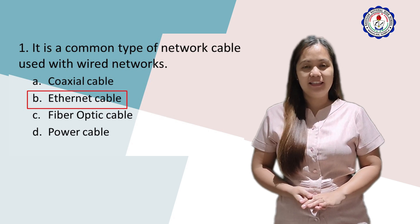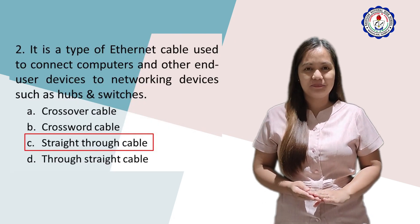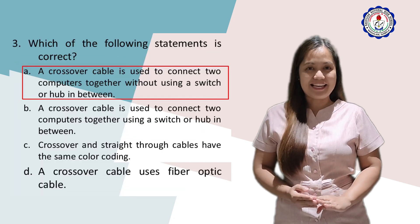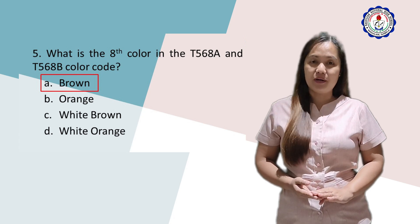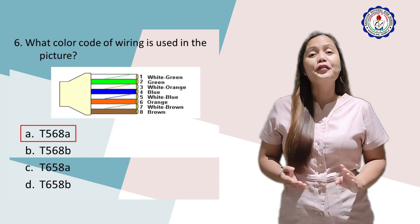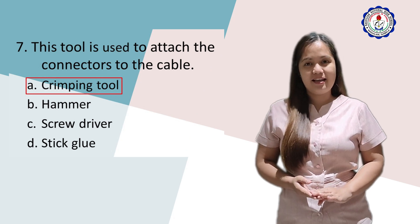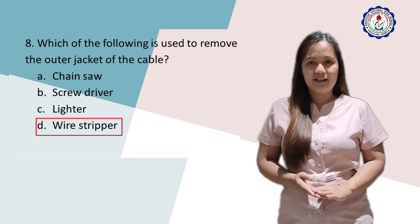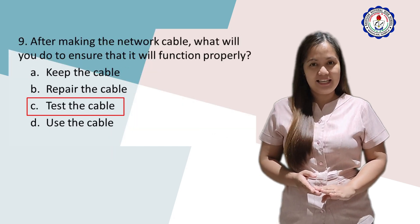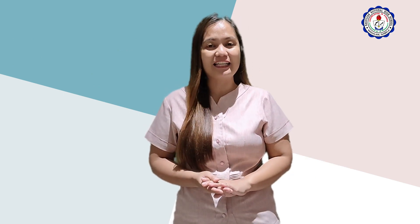Now let us check if your answers are correct. Number 1: B. Number 2: C. Number 3: A. Number 4: B (False). Number 5: A. Number 6: A. Number 7: A. Number 8: D. Number 9: C. Number 10: A. I truly hope that you enjoyed this lesson and have had a great learning experience.